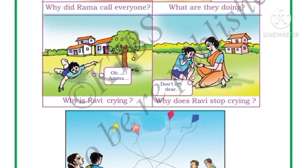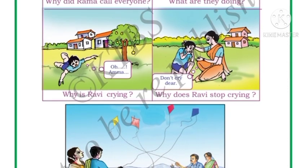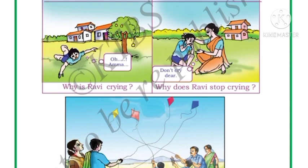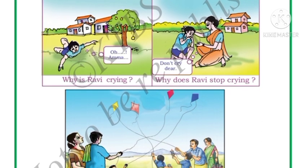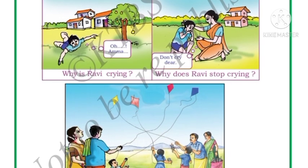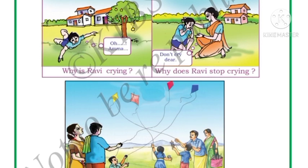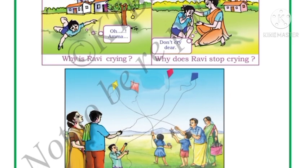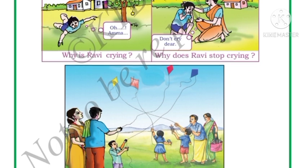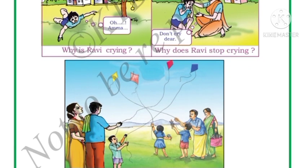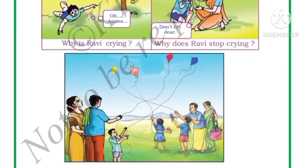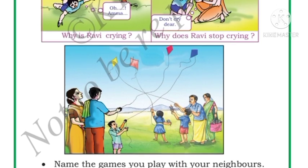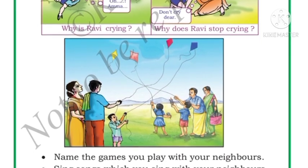Here you can see Ravi has fallen down — Ravi is crying because he fell down. Somebody came and helped Ravi stop crying. In these pictures, what can you observe? The people are helping each other. The people who live around your house are your neighbors, and they help each other in every work.